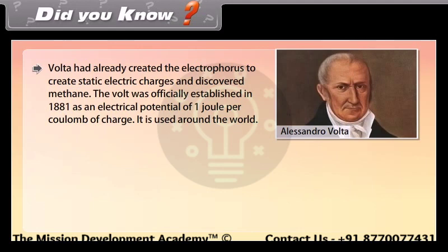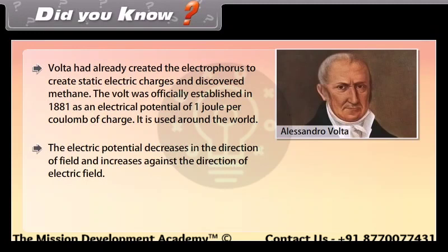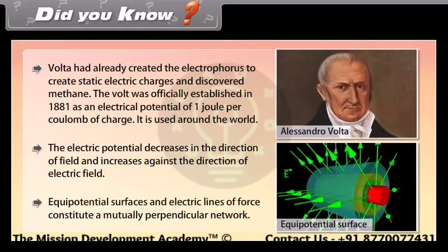Did you know? Volta had already created the electrophorus to generate static electric charges and also discovered methane. The volt was officially established in 1881 as an electrical potential of 1 joule per coulomb of charge, and it is used around the world. The electric potential decreases in the direction of the electric field and increases against it. Equipotential surfaces and electric field lines constitute a mutually perpendicular network.